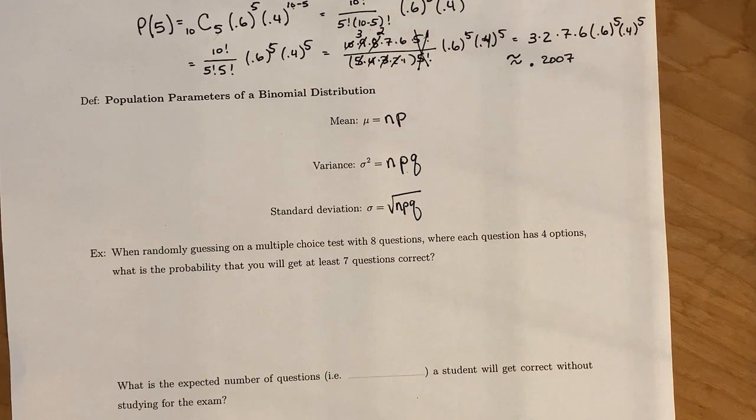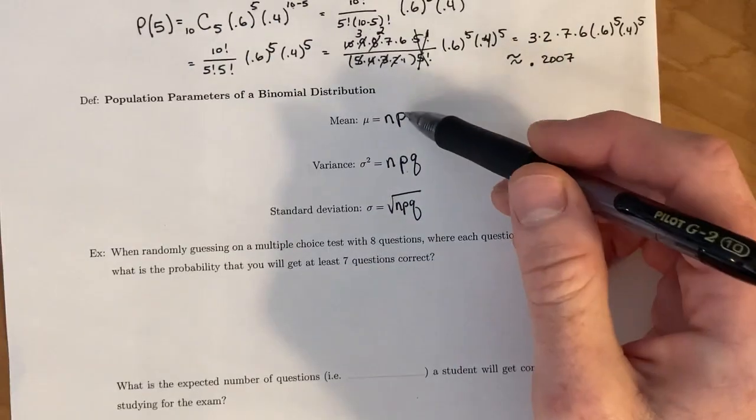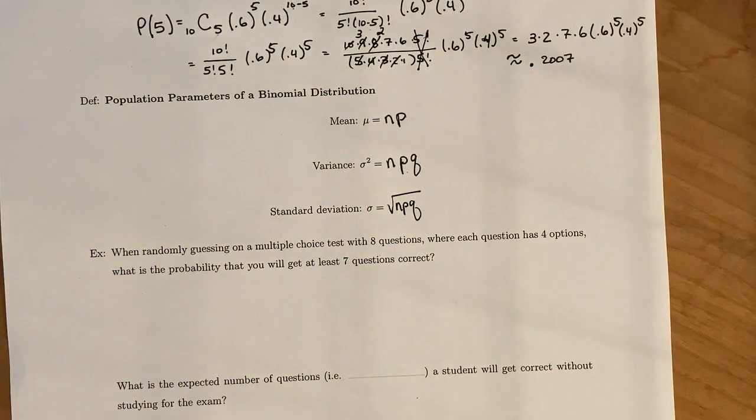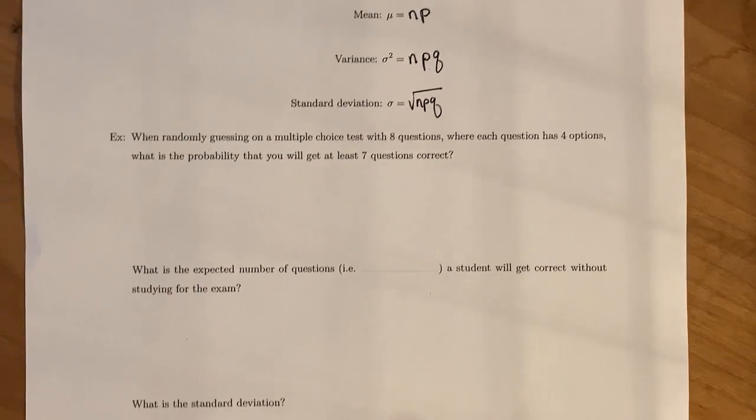And then the standard deviation is the square root of the variance. You could use the other definitions that we had in 4.1 to get the mean, variance, and standard deviation. But since these are very nice probability distributions, we have very nice formulas for their mean, variance, and standard deviation. So let's look at this example here.